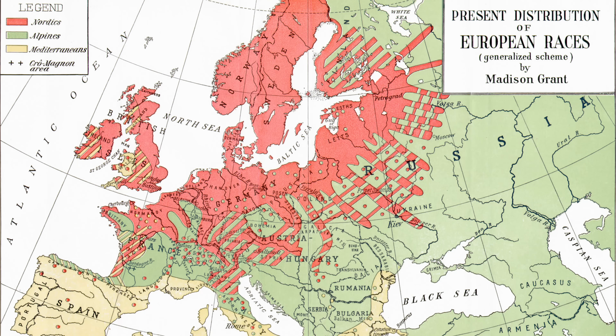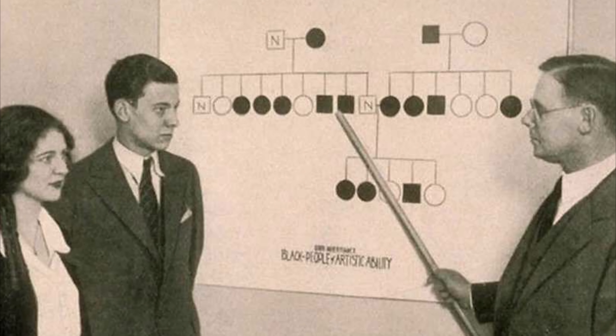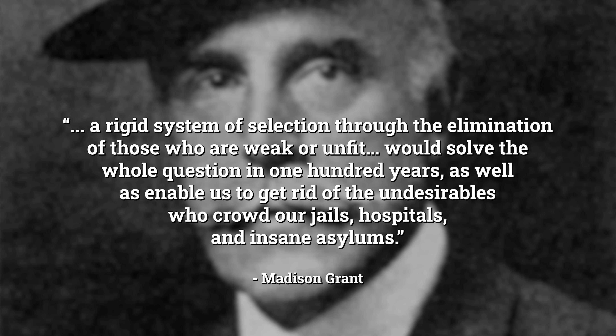One American eugenicist Hitler particularly admired was the lawyer Madison Grant. In 1916, Grant published The Passing of the Great Race, in which he lamented the pollution of the Nordic race by other inferior races. Grant was less coy than earlier eugenicists about the racist basis of his thinking. To him, the solution was clear: the American population needed to be purified through immigration restriction, selective breeding and sterilisation. He argued that a rigid system of selection through the elimination of those who are weak or unfit would solve the whole question in 100 years, and enable us to get rid of the undesirables who crowd our jails, hospitals and insane asylums. The Passing of the Great Race was the first non-German book to be reprinted by the Nazis when they took power.